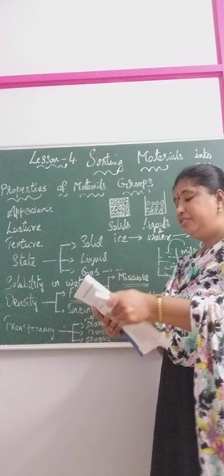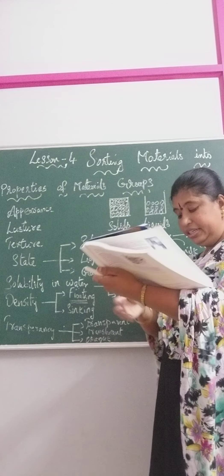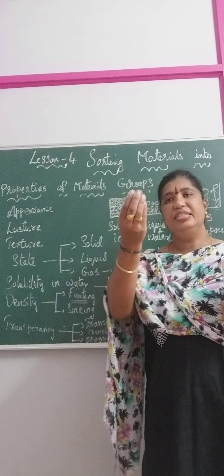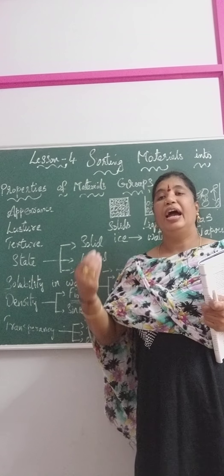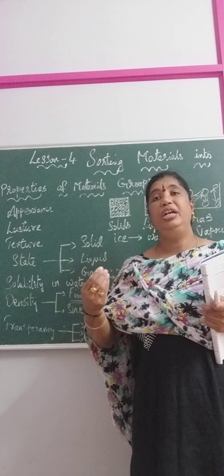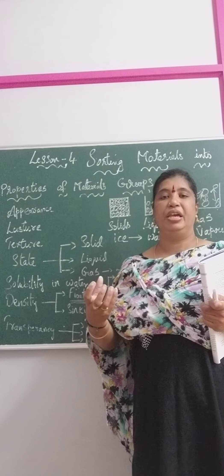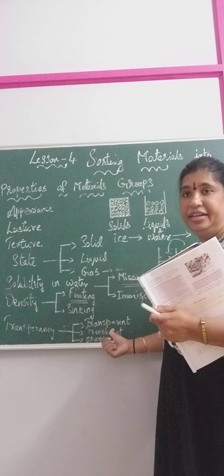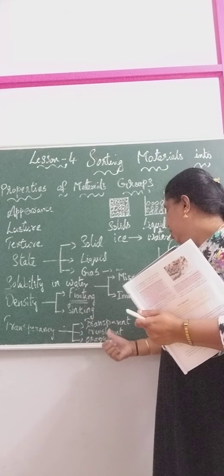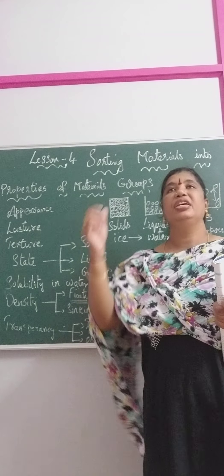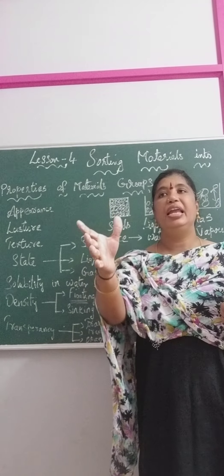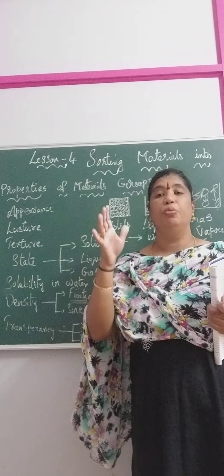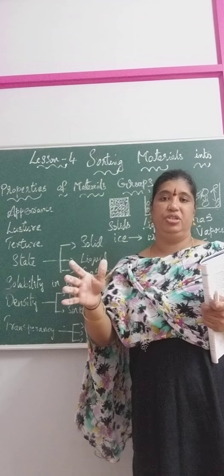Now what do you mean by translucent? Translucent is when I pass a ray of light and I can see only part of the light coming out — that is called translucent. Now opaque — if I pass a light but the light does not come out at all, that is called an opaque object.